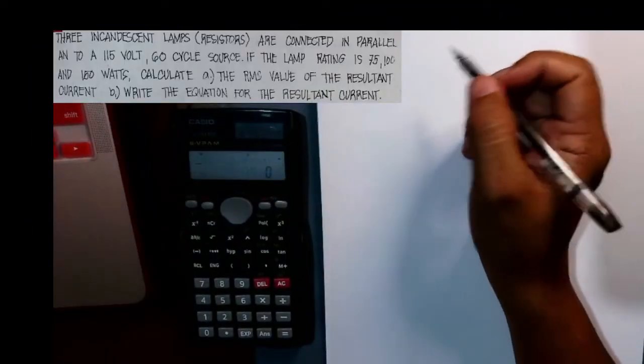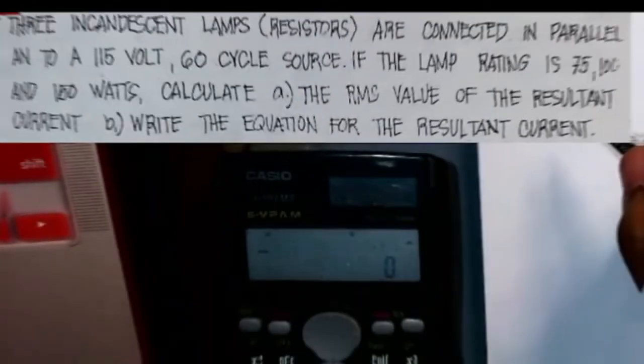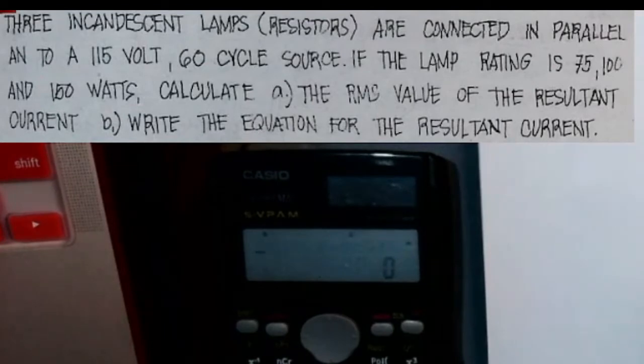Hello, welcome again to this channel. Today we are to solve this problem: three incandescent lamps are connected in parallel to a 115 volt, 60 cycle source. If the lamp rating is 75, 100, and 150 watts, calculate the RMS value of the resultant current for letter A. For letter B, write the equation for the resultant current.